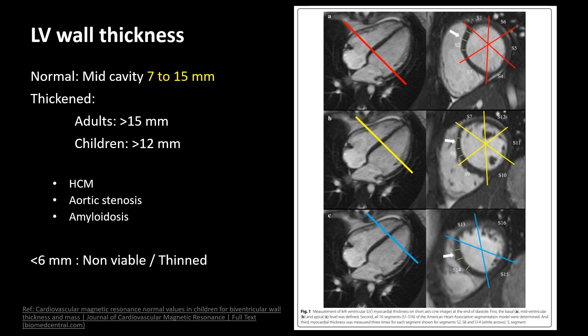Normal LV wall thickness is around 7 to 15 mm. In children, above 12 mm is considered thickened, and thickening can occur in conditions like hypertrophic cardiomyopathy, aortic stenosis, or amyloidosis. Below 6 mm is called thinned or non-viable myocardium.